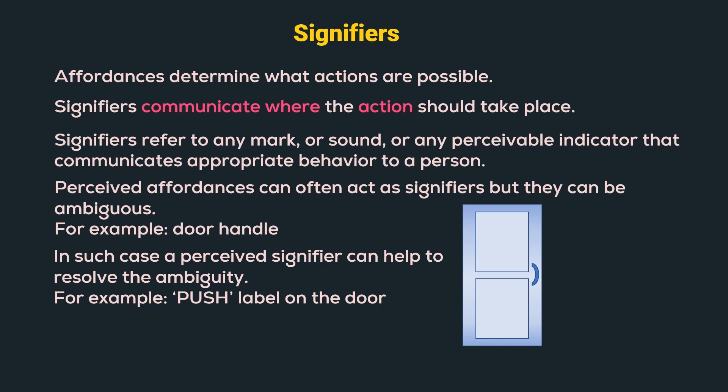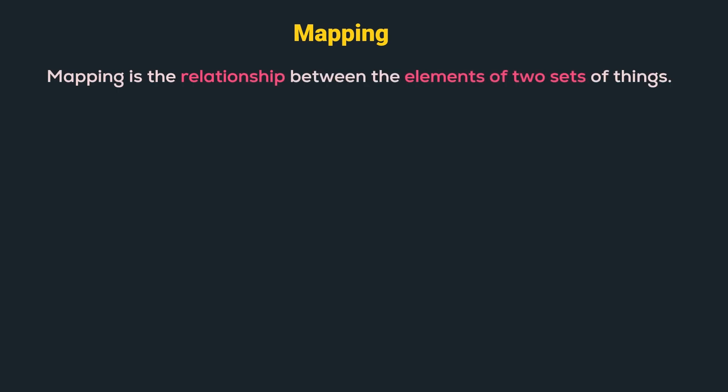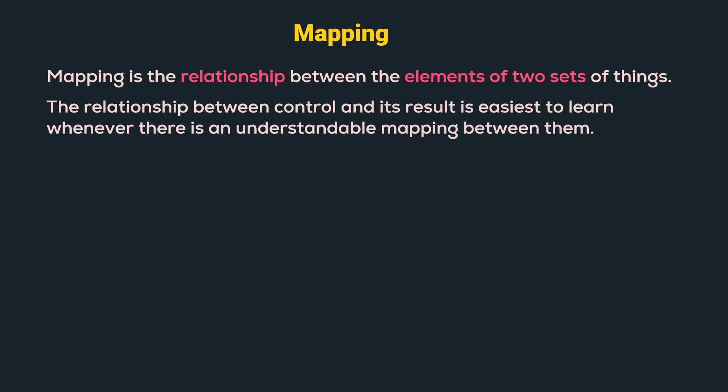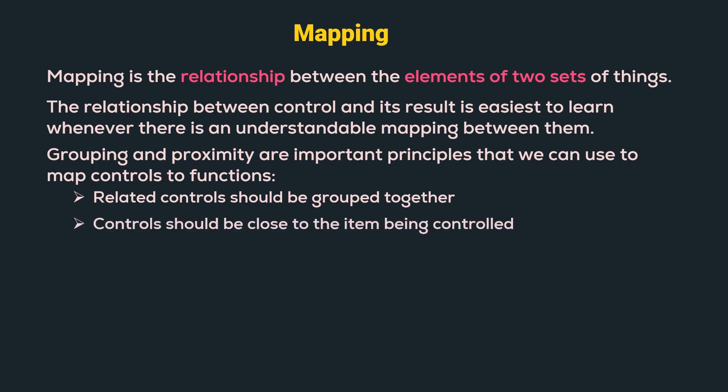The next principle is mapping. Mapping is the relationship between the elements of two sets of things. The relationship between a control and its result is easiest to understand when there is an understandable mapping between them. Grouping and proximity are important principles we can use to map controls to their functions, suggesting that related controls should be grouped together and controls should be close to the item being controlled.